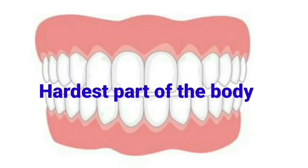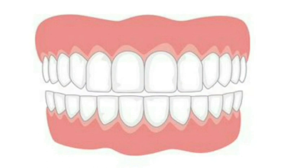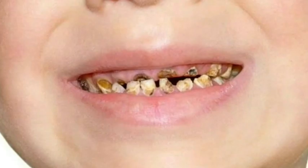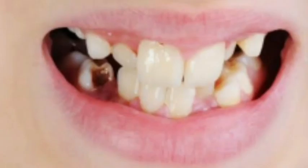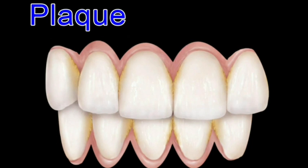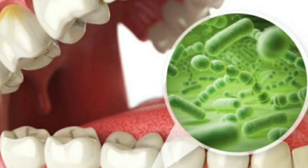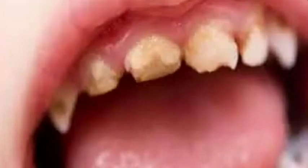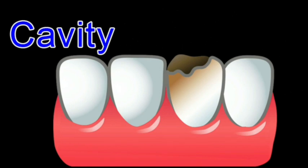Our teeth are the hardest part of our body. We use them to bite, tear and chew food. If we do not take care of our teeth, they will decay and fall out. Whenever we eat, a thin layer of food coats our teeth. If we do not rinse our mouth properly after eating, this layer becomes thick and our teeth begin to look yellow. This yellow layer is called plaque. Bits of food which stick to the teeth can cause tiny germs called bacteria to grow in the mouth. These germs break down the food particles and produce an acid. This acid makes a hole or cavity and causes toothache.